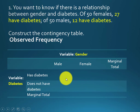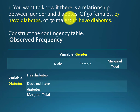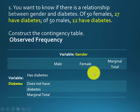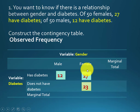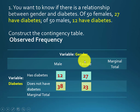This is a 2-by-2 table — two because gender has two categories and diabetes also has two categories: yes or no. So we have male and female on one axis, and has diabetes / does not have diabetes on the other. Out of 50 females, 27 have diabetes, so 23 do not. Out of 50 males, 12 have diabetes, so 38 do not.